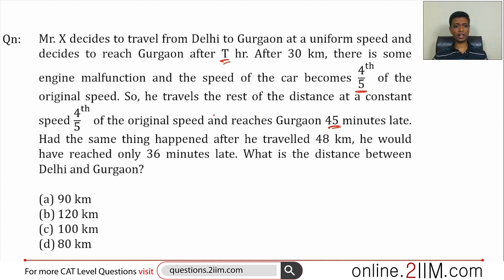Had the same engine malfunction happened after he traveled 48 kilometers, he would have reached only 36 minutes late. So the engine runs smoothly till 48 kilometers, not till 30, so much longer. So he would reach quicker, he would have taken only 36 minutes late. What is the distance between Delhi and Gurgaon? Good question. Again, a puzzle around speed, time, distance.